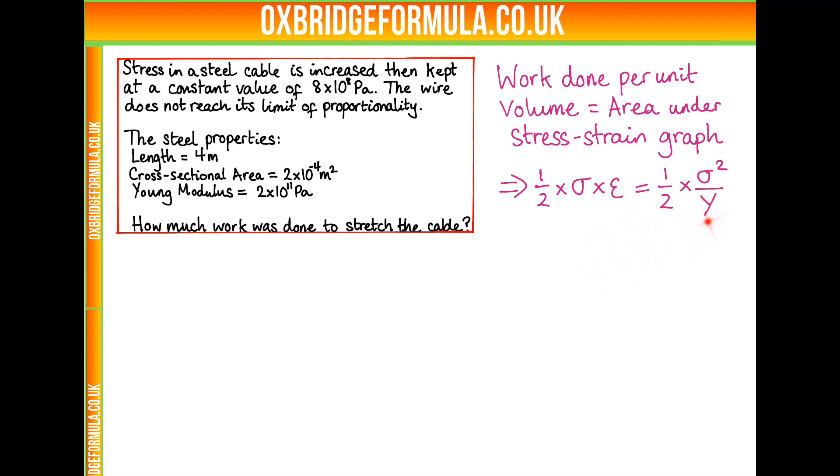This becomes half times sigma squared divided by Y. We have an expression for the strain energy per unit volume, or the work done per unit volume. These are the same thing. Now we just need to multiply by the volume, which is the cross-sectional area times length. We get work done is half times sigma squared over Y times A times L.